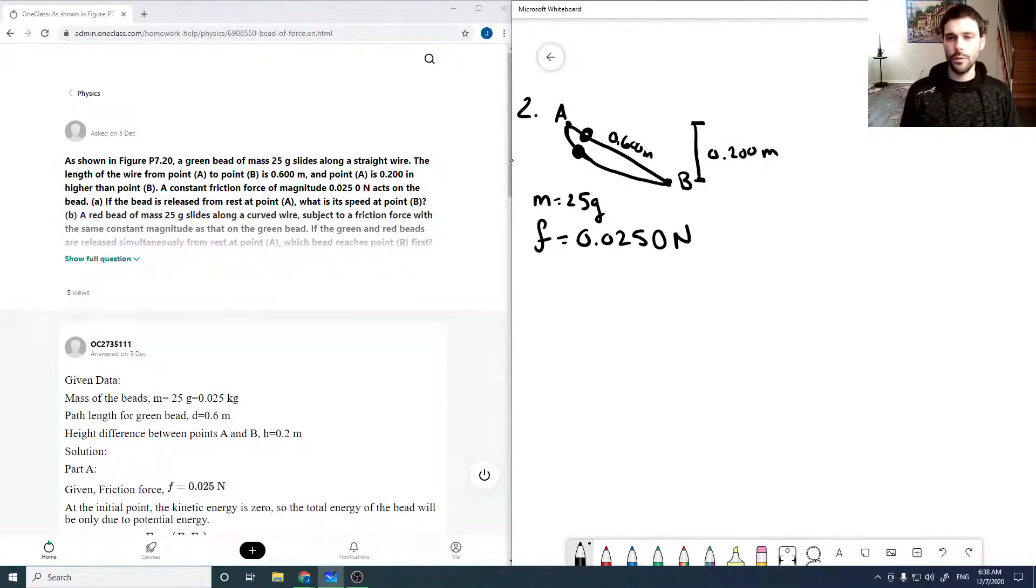So we could easily... the first question is just, what is its speed? So if VI is 0, what is VF? So we release it from rest at A, what's its speed at B? So this is quite a simple question.